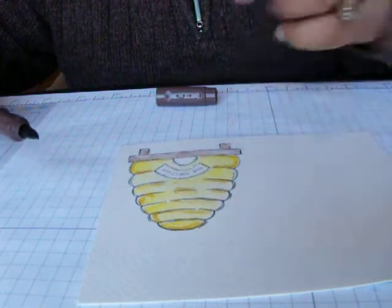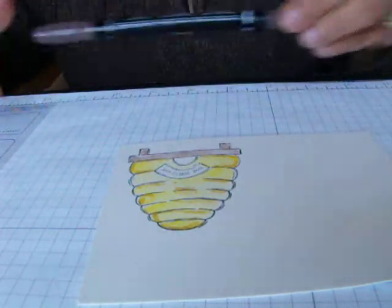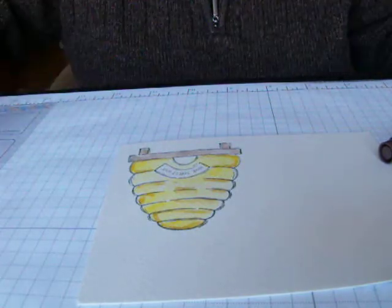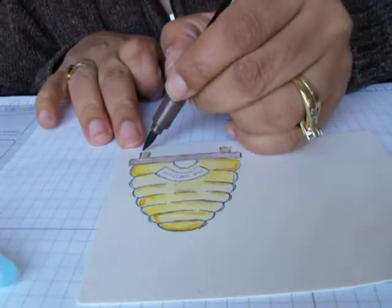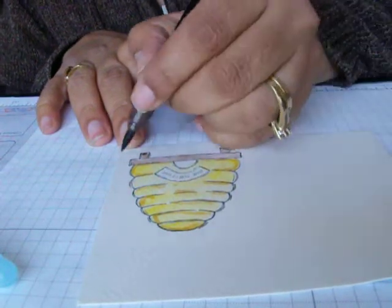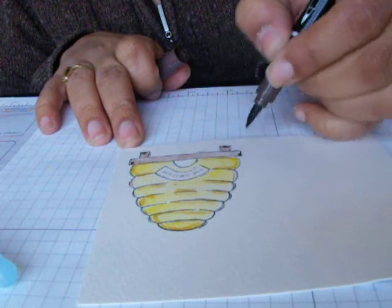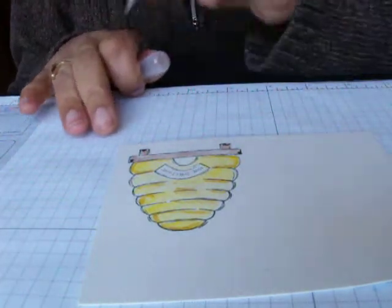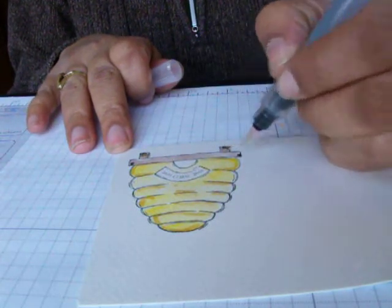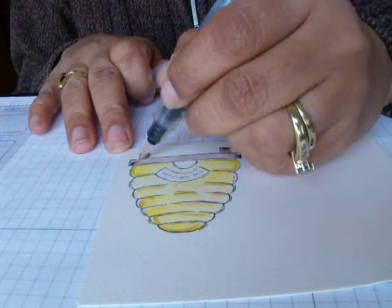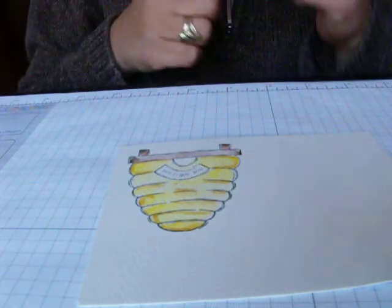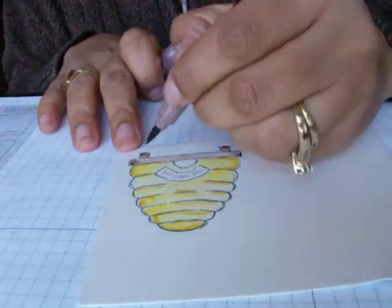And now we're going to use the Chocolate Chip to do some highlights at the bottom. Again, remember this is Chocolate Chip so this is really dark, so you don't really need that much. See, I just did a little drop and now I'll use my watercolor brush and pull. See how it does a little highlighting?